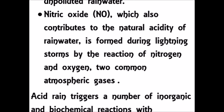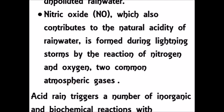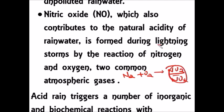Nitric acid is formed naturally during lightning storms by reacting with nitrogen and oxygen. Nitrogen and oxygen are the two most common atmospheric gases. When lightning storms occur, these two gases are fused together and form nitric oxide, which contributes to the natural acidity of rainwater.